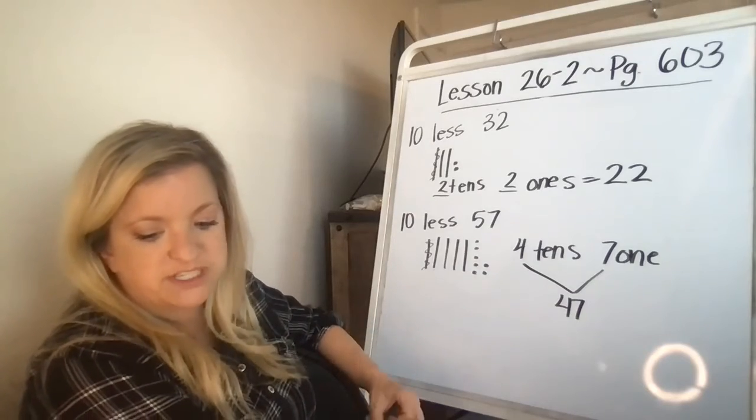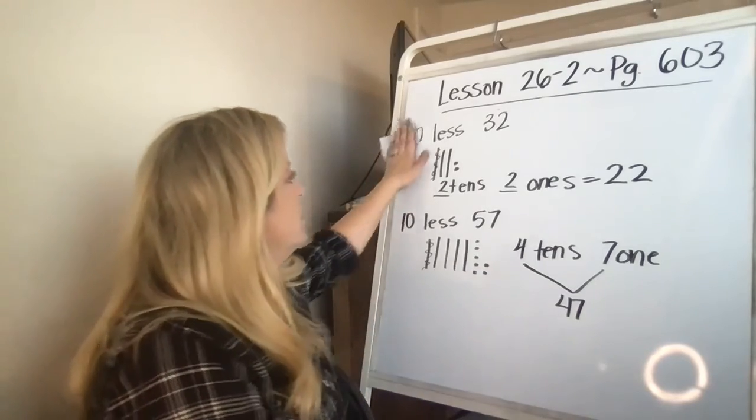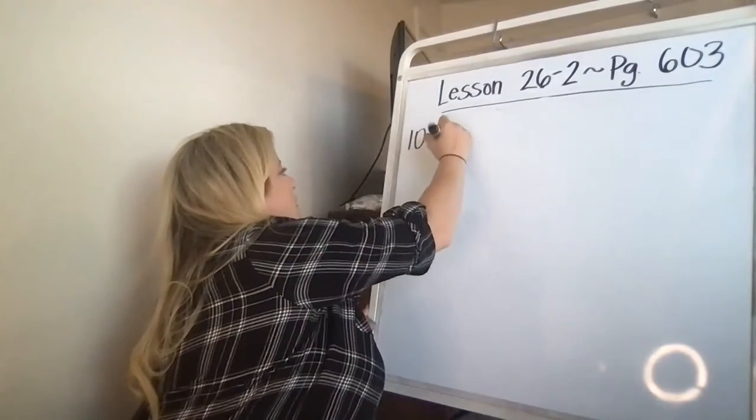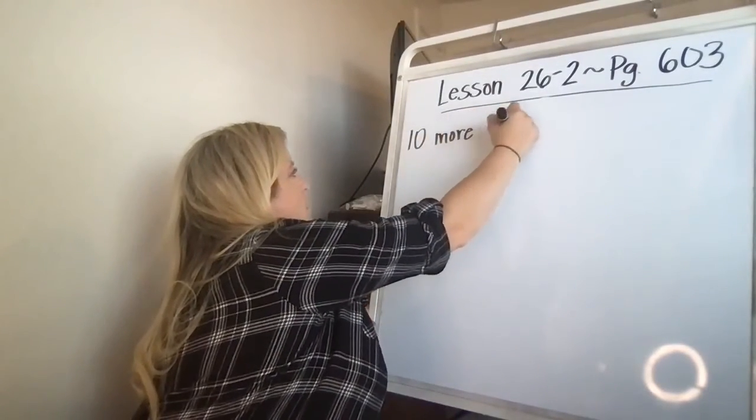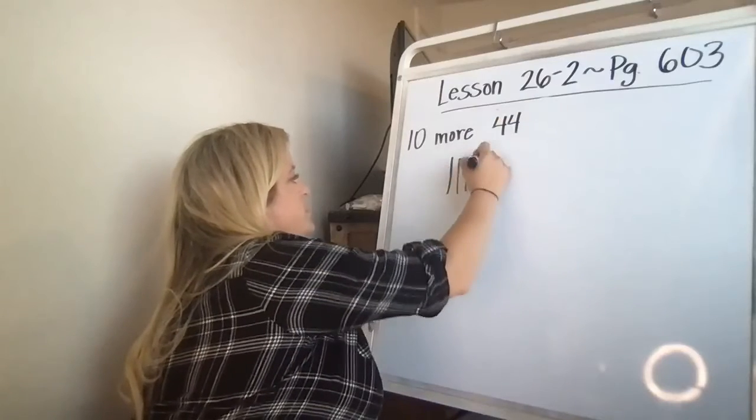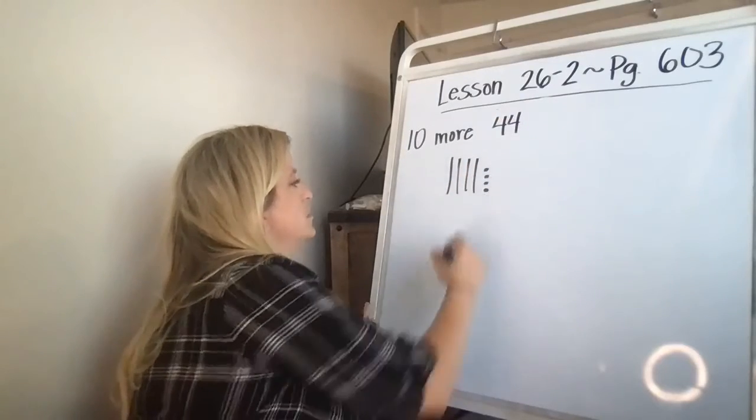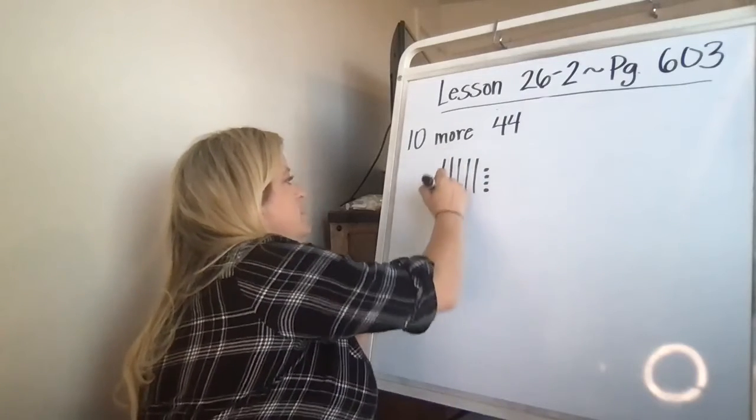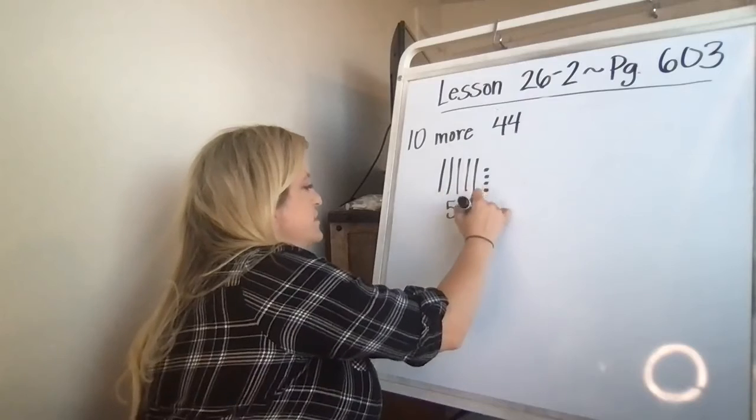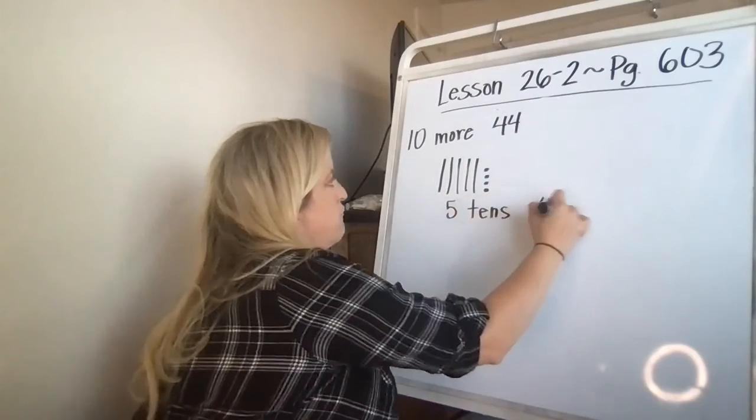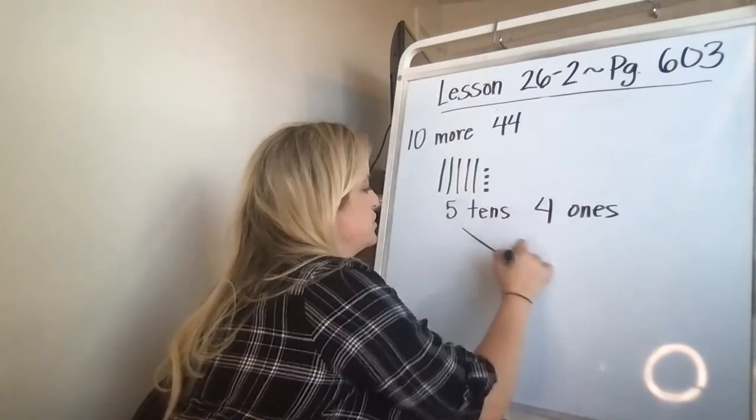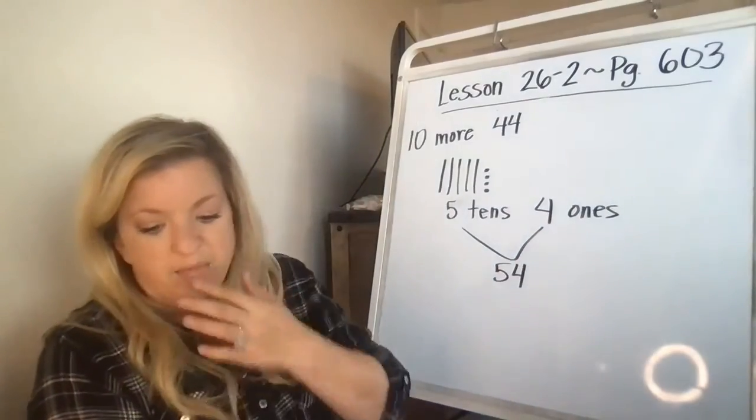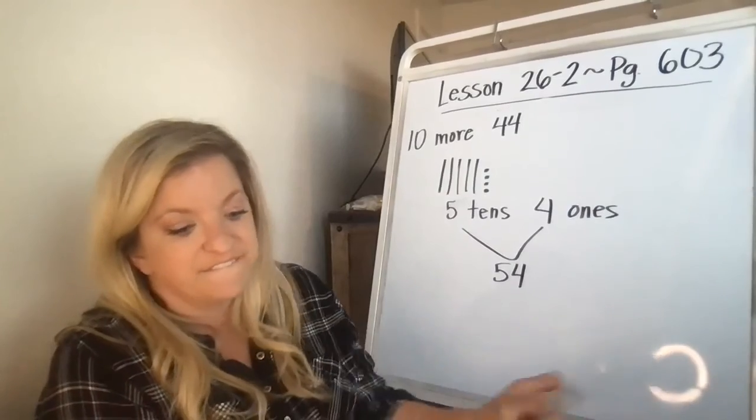The last one, number four says, what is 10 more than 44? So 10, 20, 30, 40, one, two, three, four, four tens. Oops, I forgot to add in my other one. Four plus one. Four plus one is now five tens. Four ones. Those, when you put them together, smush them together is 54. So 10 more than 44 is 54.